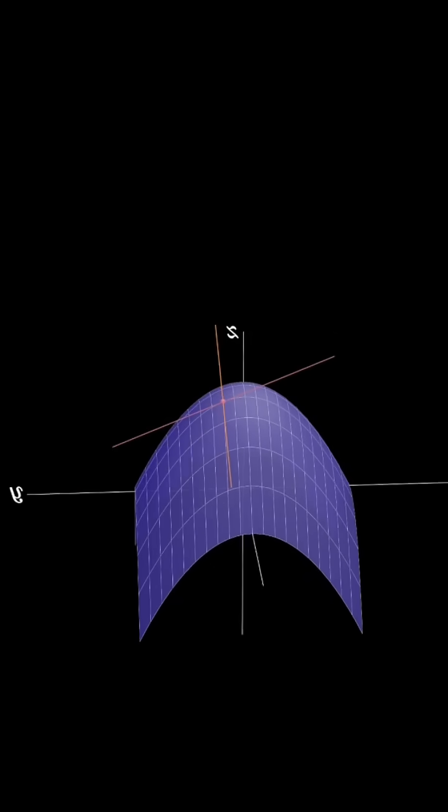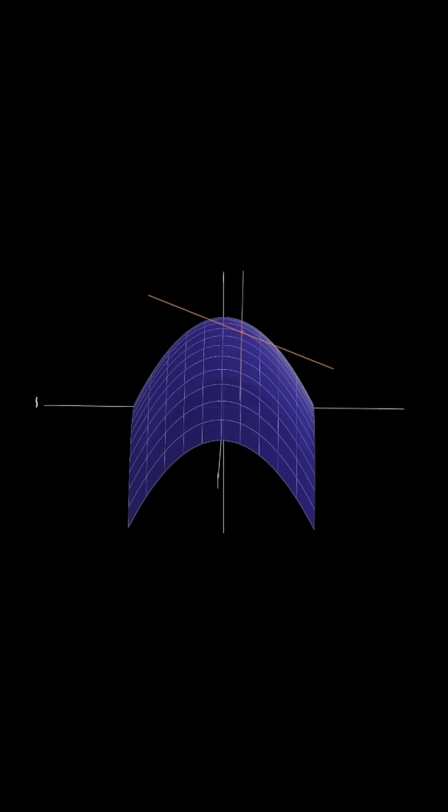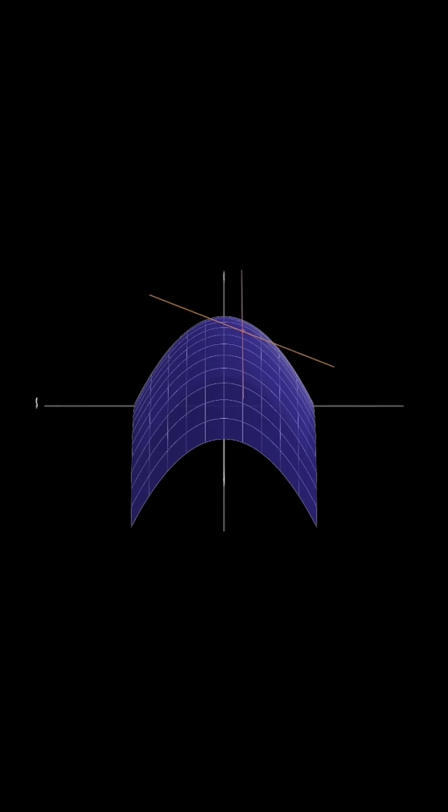With the two tangent lines in hand, one where y is held constant and one where x is held constant, we can then determine the flat space spanned by these two lines. This is known as the tangent plane.